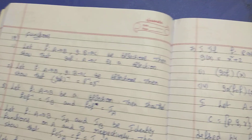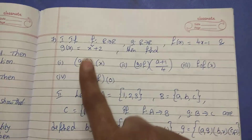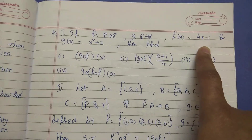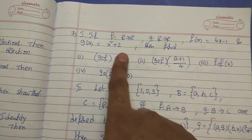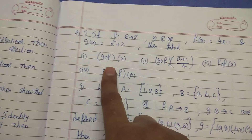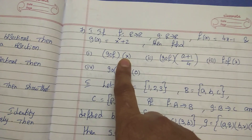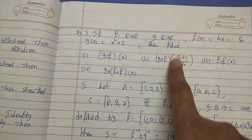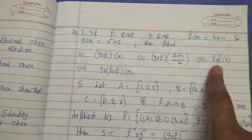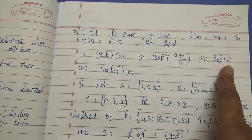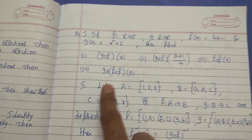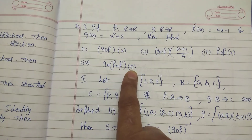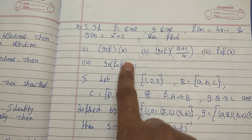This theorem is important. Changes equal to one time. F of X is 4X minus 1, G of X — find G circle F of X, G circle F of A plus 1 by 4. This is F circle F of X. Next: G circle F circle of 0 is equal to F of 0.